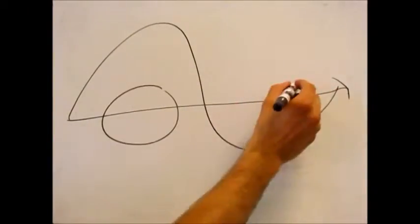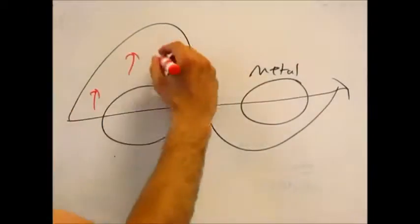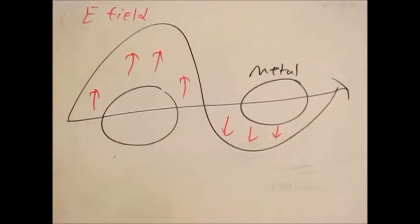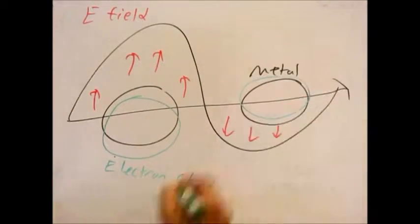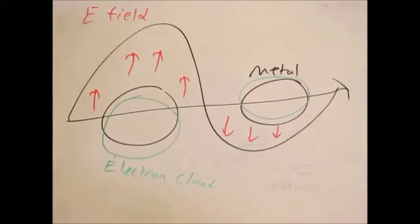Surface plasmon resonance occurs in a metal if the frequency of the incident light matches the natural frequency of the metal surface electrons oscillating against the restoring force of their positive nuclei.